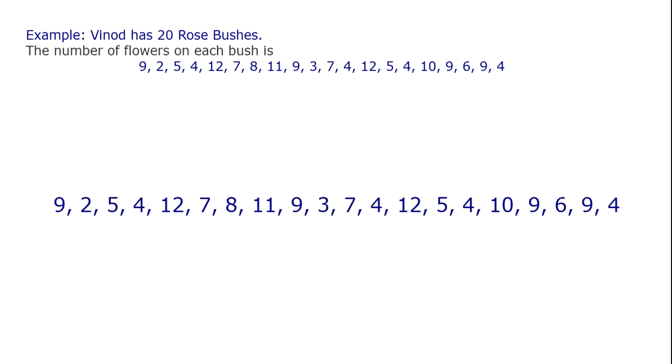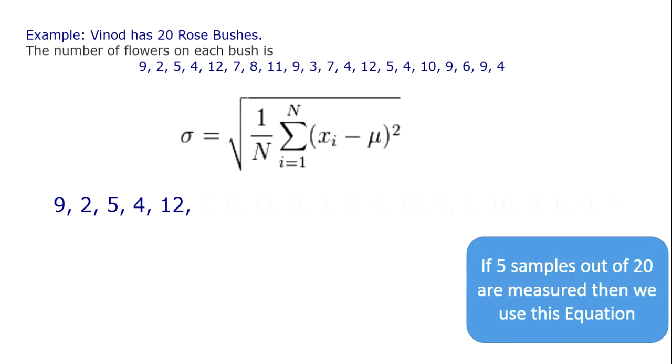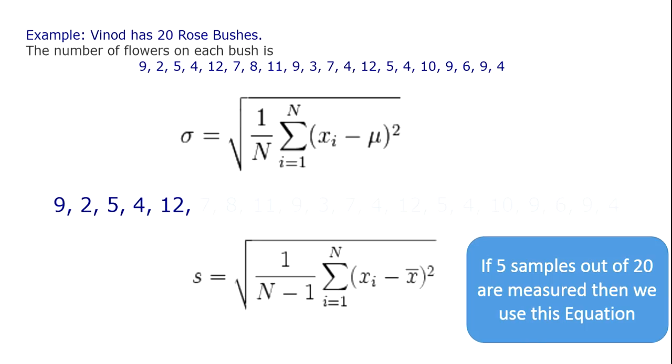If we know the number of flowers of all 20 bushes, we use the general formula of standard deviation. Whereas if only 5 samples out of 20 are measured, we use the second equation. So for samples we use the second equation. In the question it is given that the water sample is taken. In lake water we can only take samples, we cannot take all measurements. So we take the equation for sample.